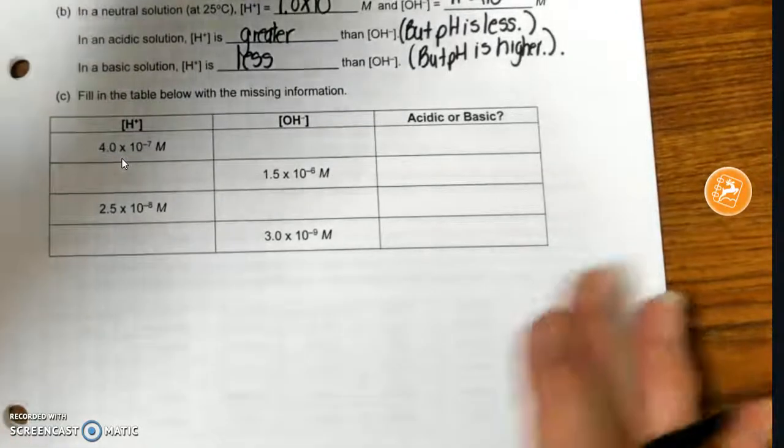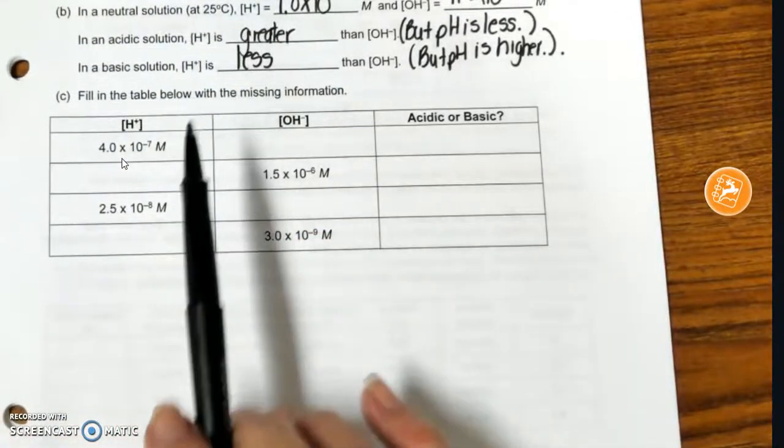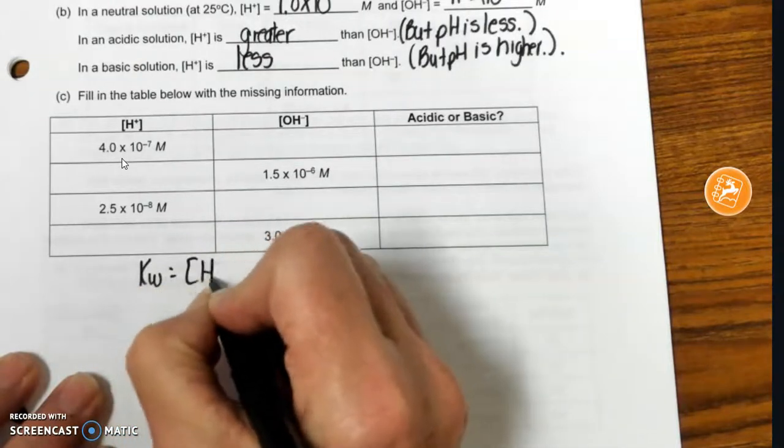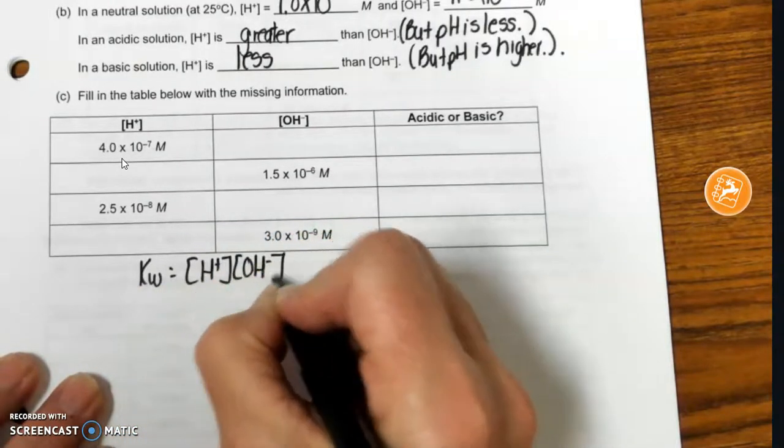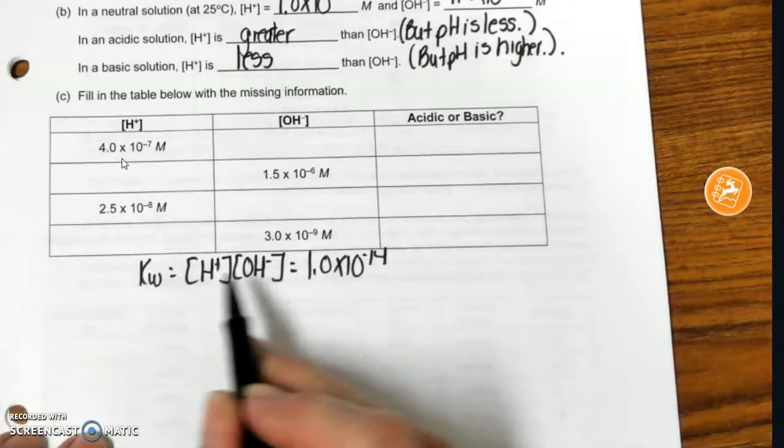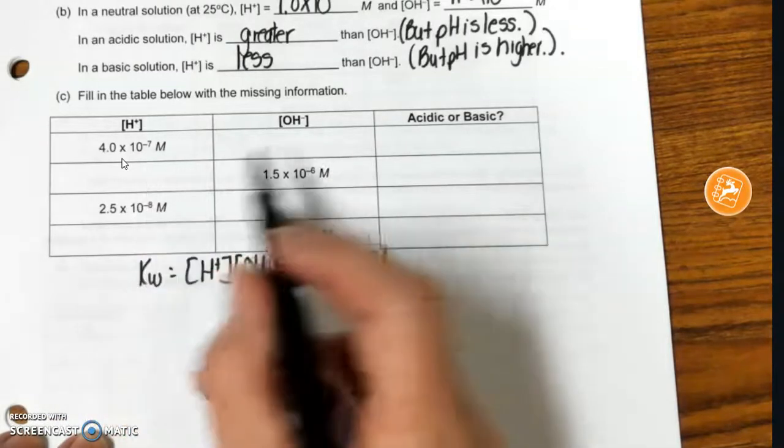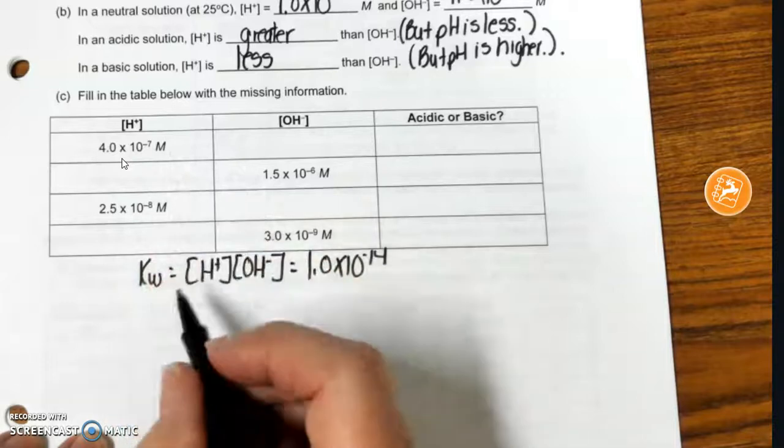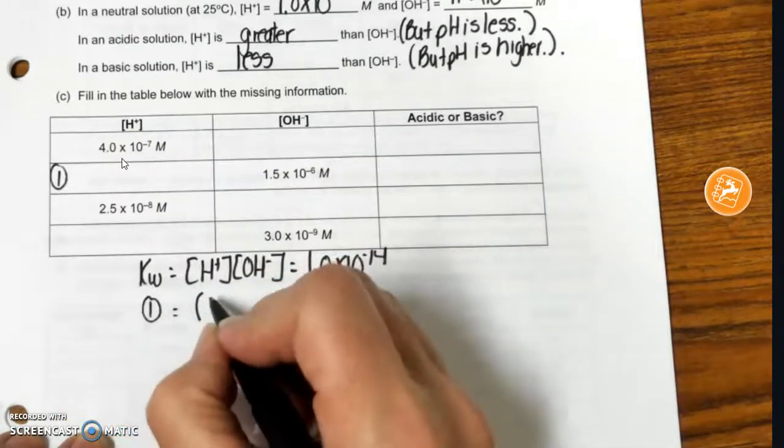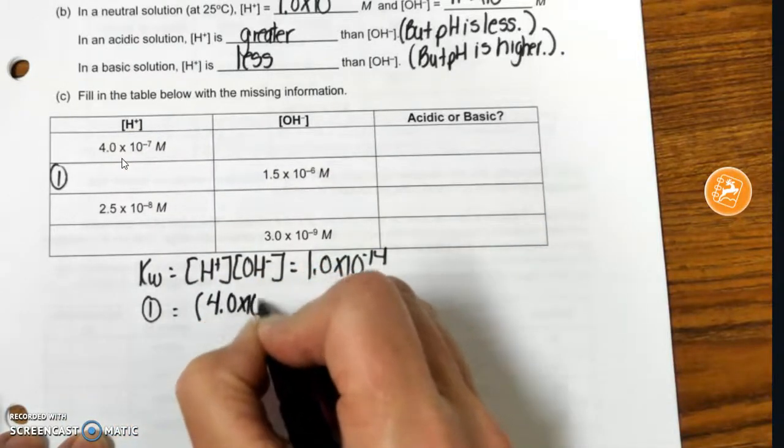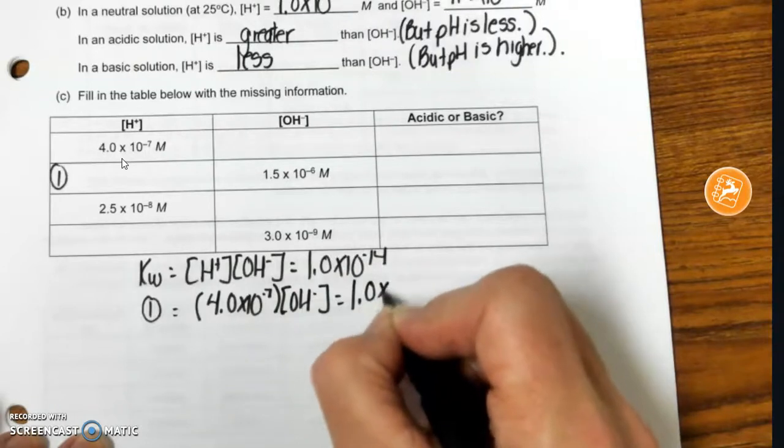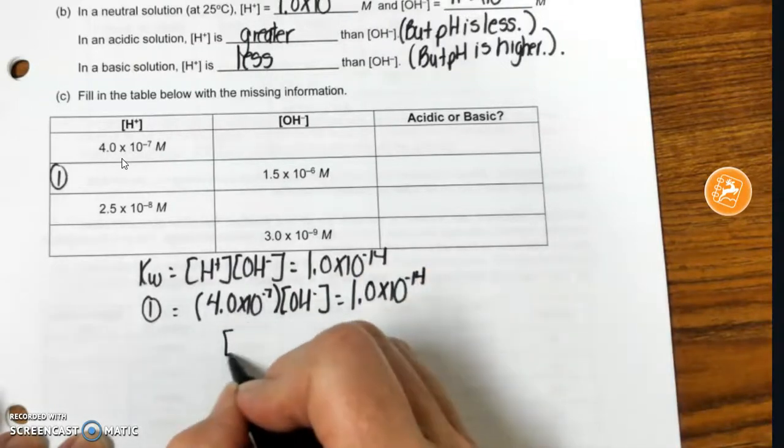Now, what we're going to do first is look at how we determine, based on concentration, whether a solution is acidic or basic. Remember, we said that KW is equal to H plus times OH minus, which is 1.0 times 10 to the minus 14. So if I have one of either of these, I can calculate the concentration of the other. So I'm just going to do the first couple. That means that I can say for number 1 that 4.0 times 10 to the minus 7 times the OH concentration is equal to 1.0 times 10 to the minus 14. And if I put all that in my calculator,